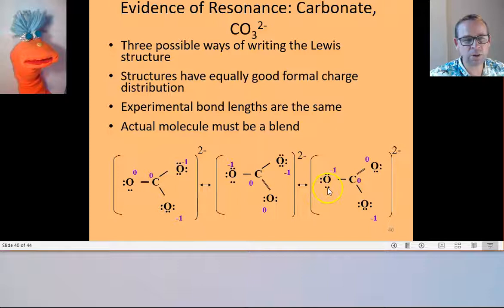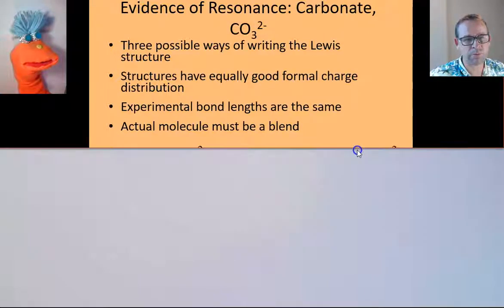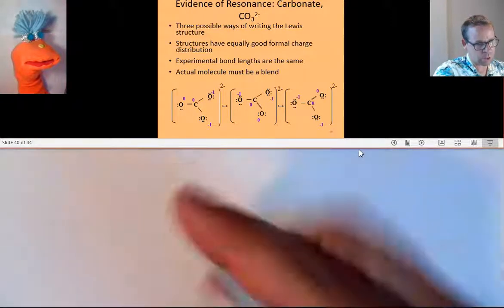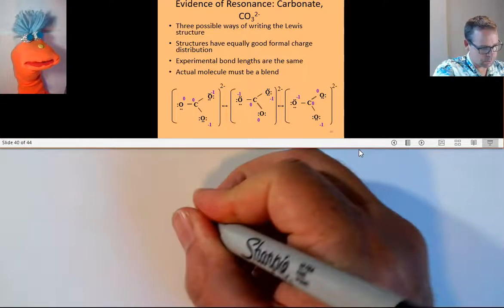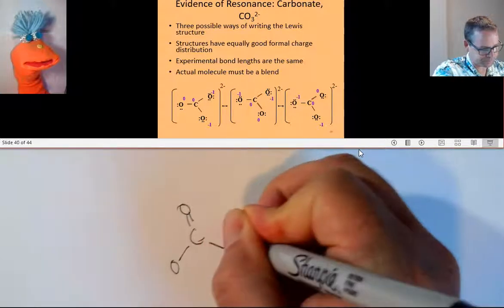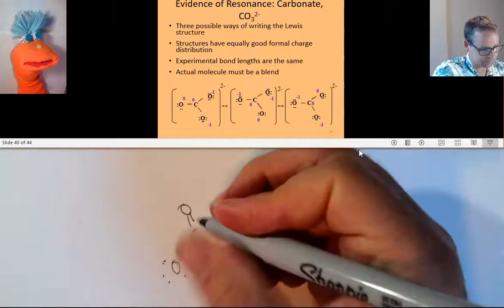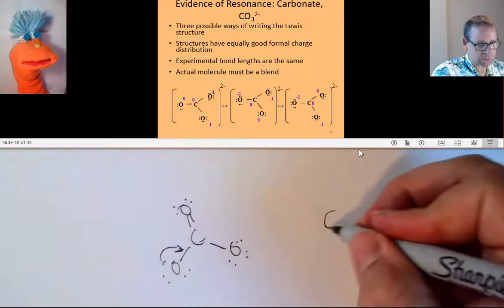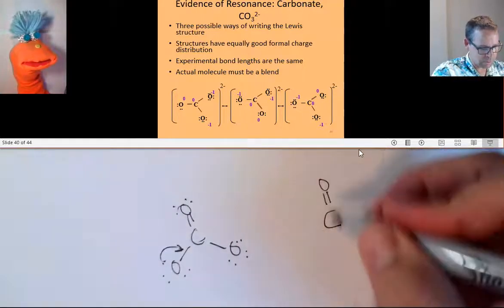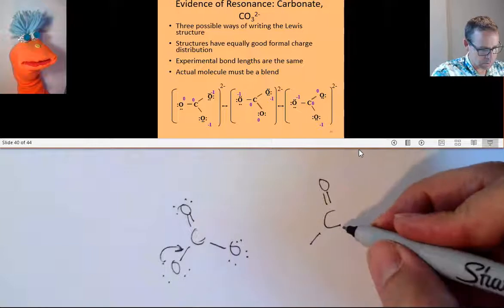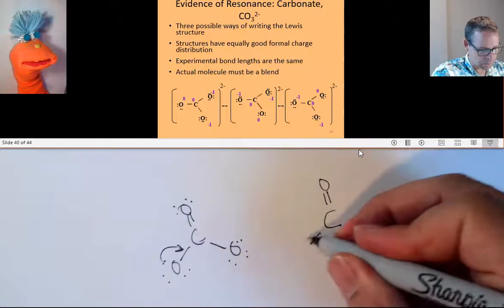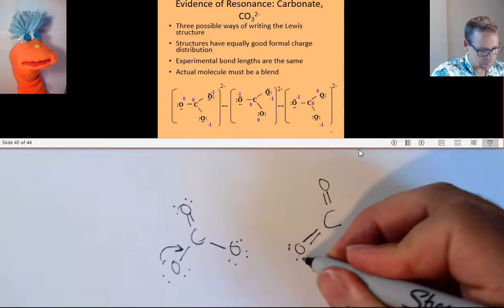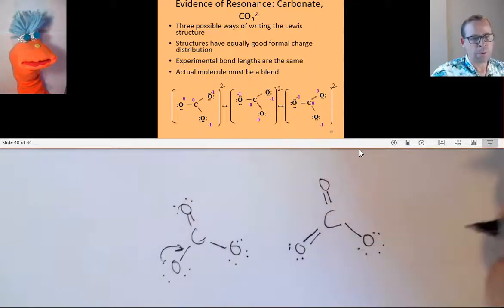Because if the electrons on any of the negatively charged oxygens moved in to the carbon to double bond, so for example, let me draw ourselves a little carbonate ion. If these electrons move into here, the result is that structure there.